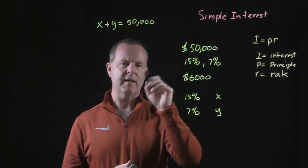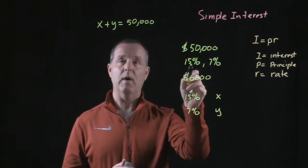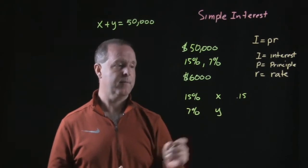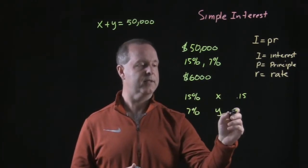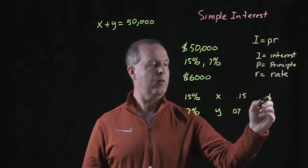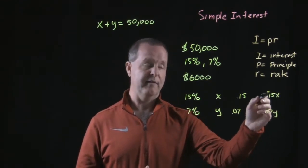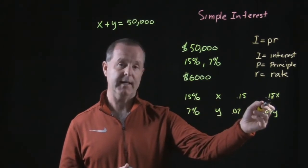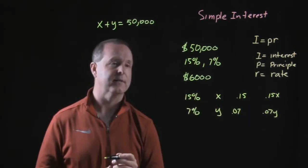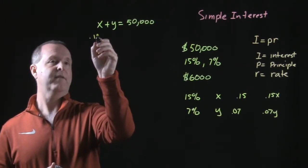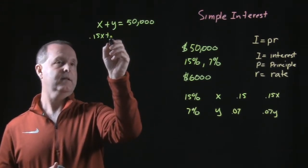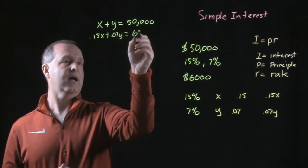Now we need to figure out another equation. If I put one amount in the 15% account, that's 0.15 times X, and in the Y account I'll put 0.07 times Y. These combined — 0.15 times an amount plus 0.07 times an amount — represent interest from one account plus interest from the other. Principal times rate equals interest, and the interest equals 6,000. So: 0.15X plus 0.07Y equals 6,000.